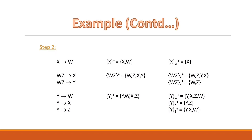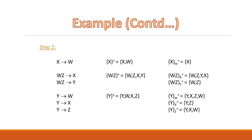Our next functional dependency is Y to W. When we include it, the closure of Y contains Y, W, X, and Z. If we remove it, the closure remains the same — Y, X, Z, W. So the functional dependency Y to W is non-essential.